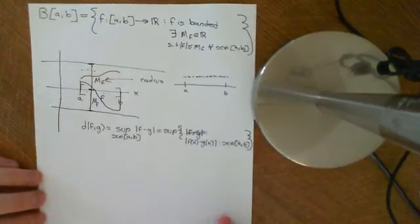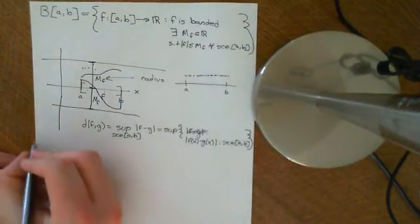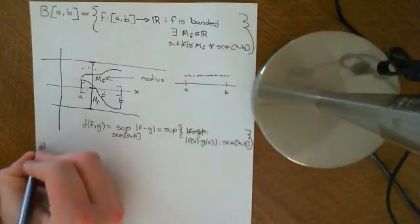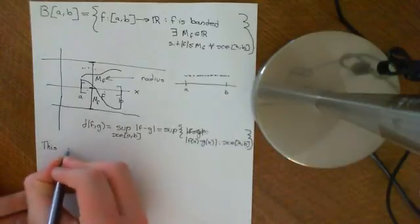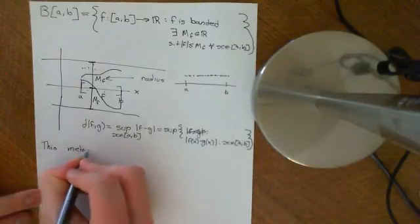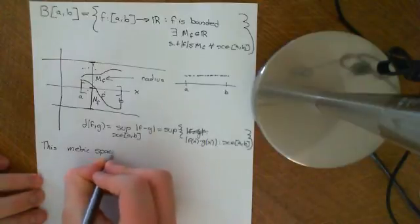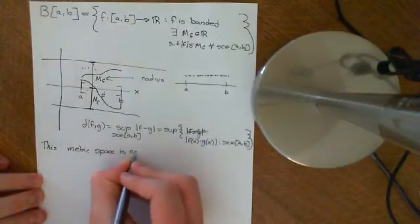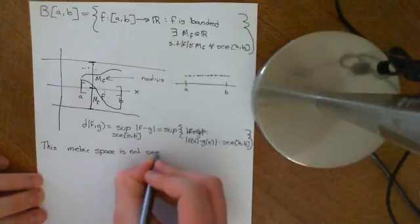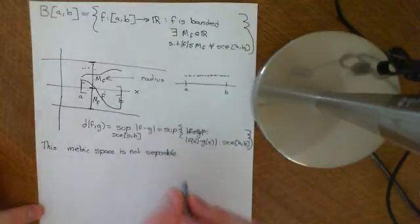What we want to show is that B(A,B) is not a separable metric space. The proof is very similar to the proof that N-infinity is not separable.